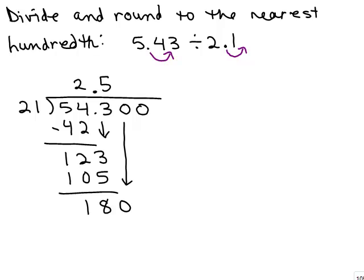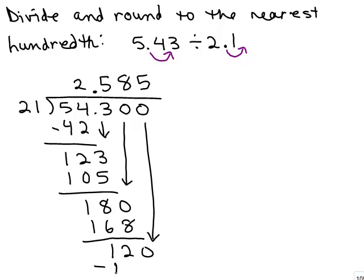21 into 180, I think that goes eight times. And that's 168. I'm going to bring down one more. 21 into 120, I think that's going to go five times again, 105. And yes, the decimal remainder is going to be 15, so we're cool.